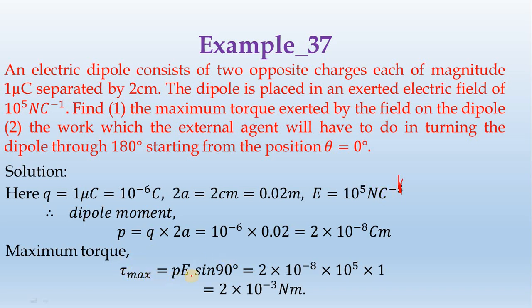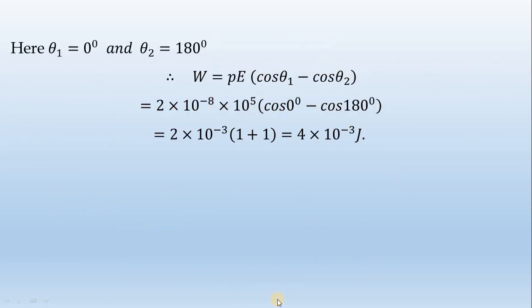The maximum torque, sin 90 is maximum. P E sin theta, sin 90 equals the value of P and E, 2 into 10 to the power minus 3 newton meter. First, we have maximum torque.